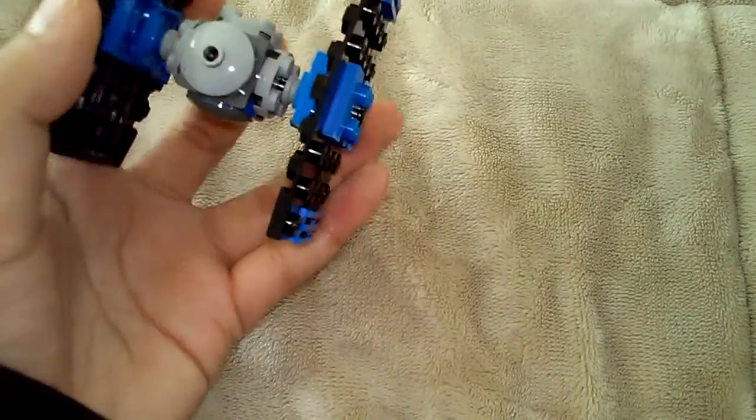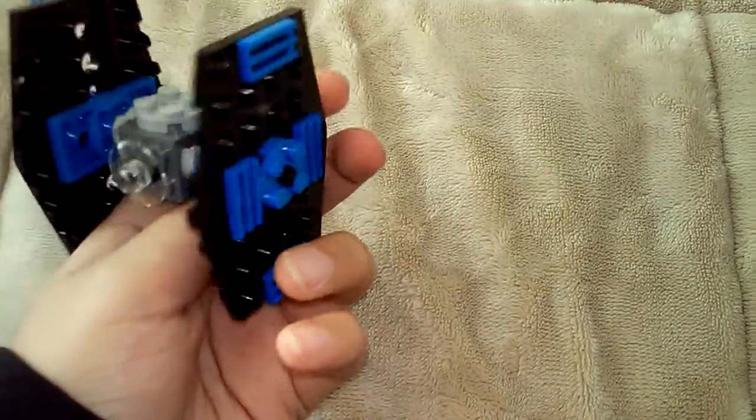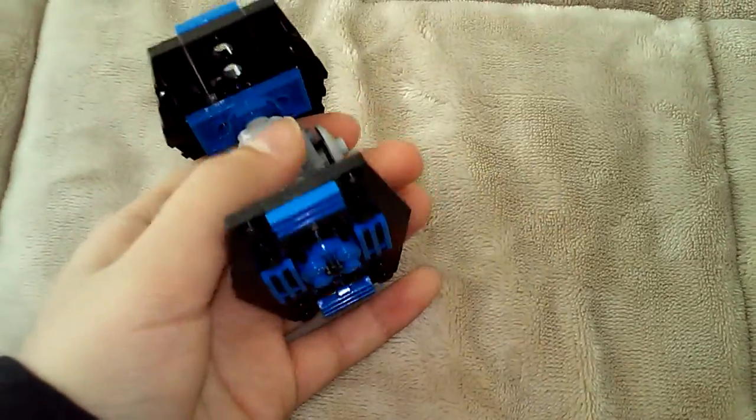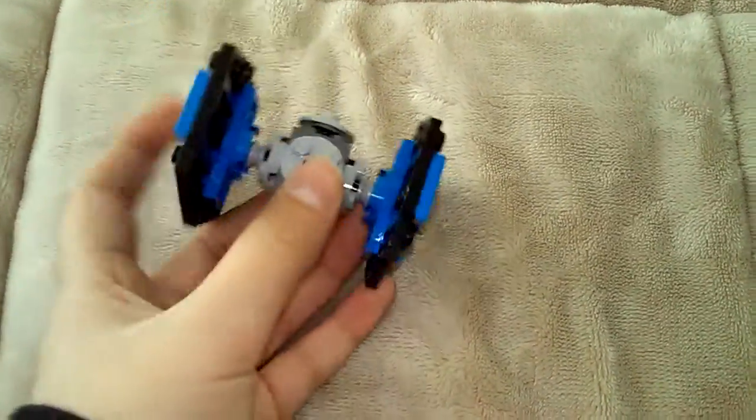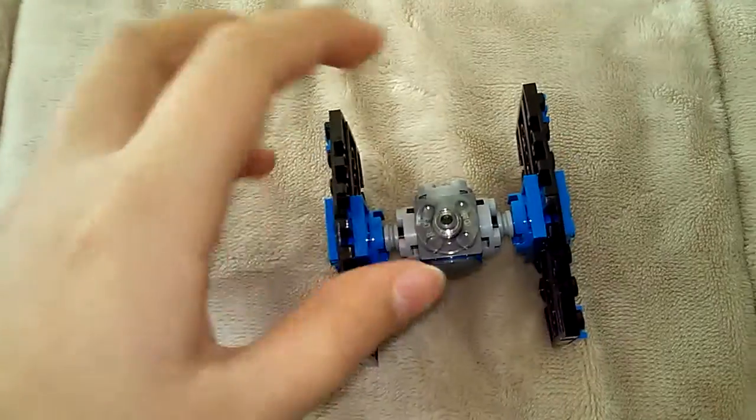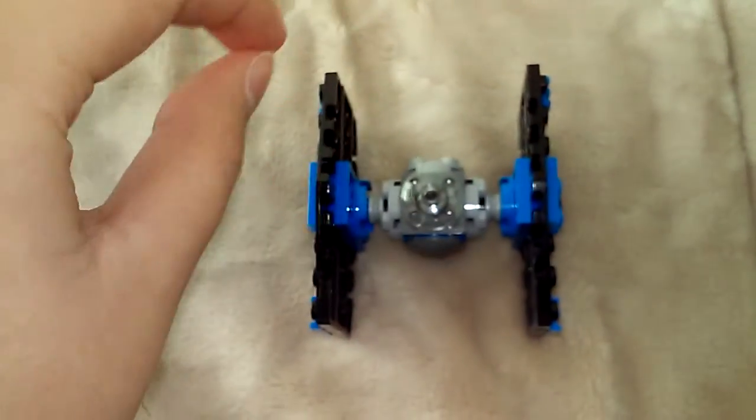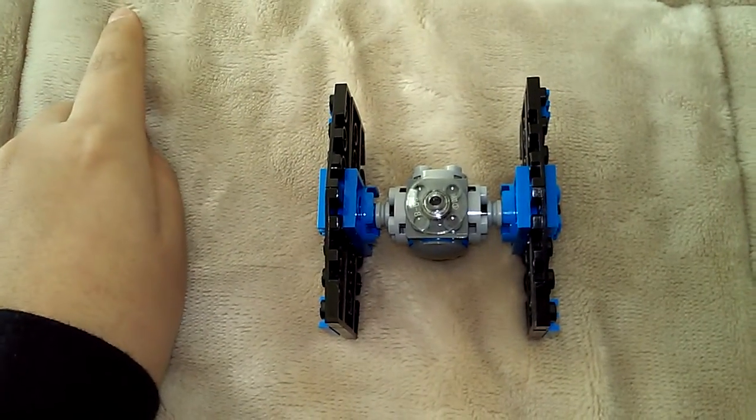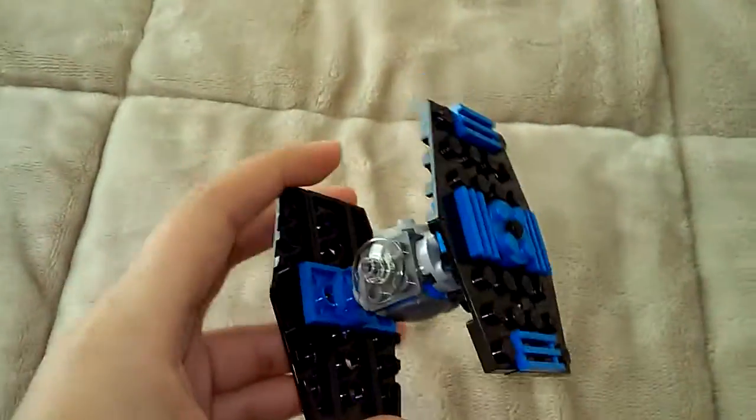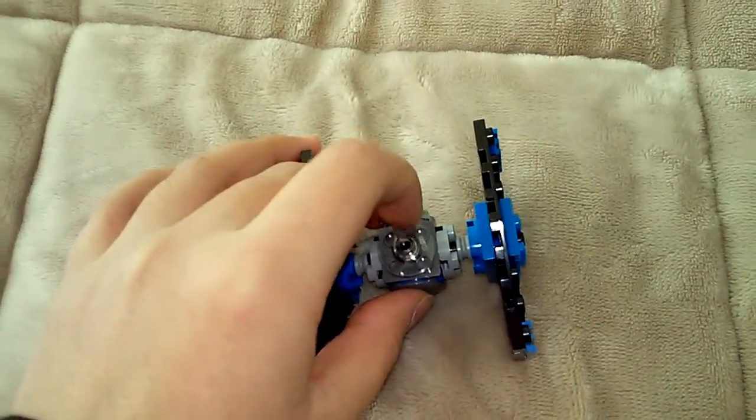The TIE Fighter original, so the TIE Fighter, the word TIE actually stands for Twin Ion Engine and Fighter. So it's a Twin Ion Engine Fighter. Right here is the little cockpit where you can see through and they're trying to make it as round as possible.